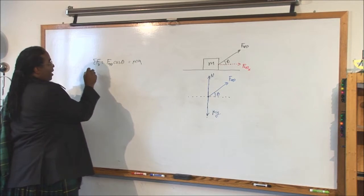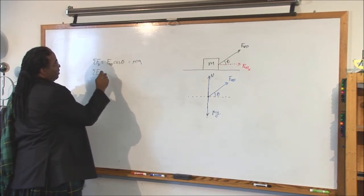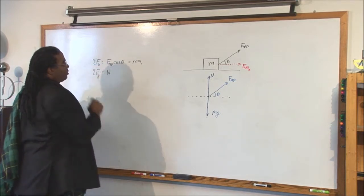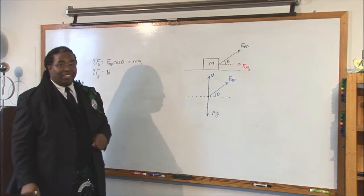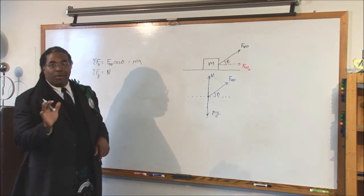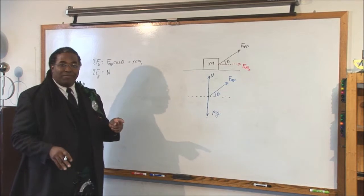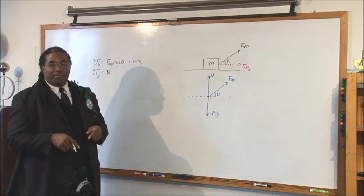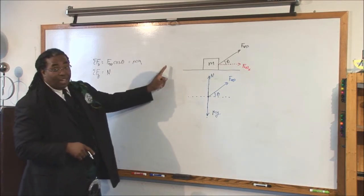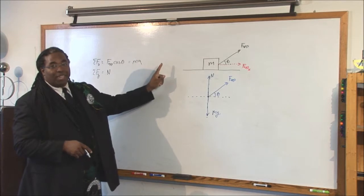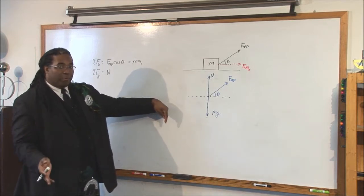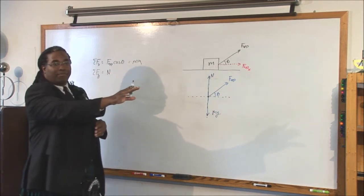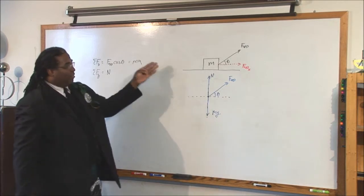Now for the sum of the forces in the y: what's going up is the normal force. Anything up is positive, anything down is negative. Always, when dealing with vectors, the sign of the number or the vector indicates direction. If you consider up the positive y direction, anything going up is positive; the negative y direction means any arrow pointing down is negative. Same for x: positive x is to the right, negative x is to the left.